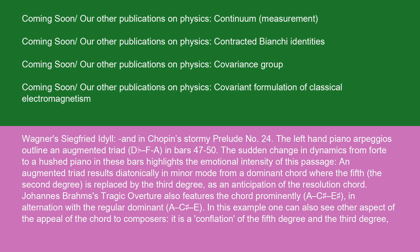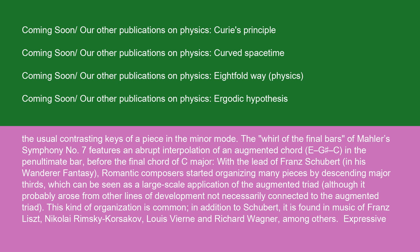An augmented triad results diatonically in minor mode from a dominant chord where the fifth, the second degree, is replaced by the third degree, as an anticipation of the resolution chord. Johannes Brahms' Tragic Overture also features the chord prominently, C-E-G#, in alternation with the regular dominant, C. In this example, one can also see another aspect of the appeal of the chord to composers: it is a conflation of the fifth degree and the third degree, the usual contrasting keys of a piece in the minor mode.